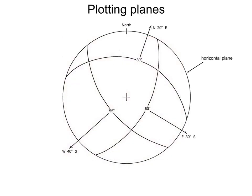This figure shows planes of different orientation. A horizontal plane will fall on the primitive. A vertical plane will be a straight line passing through the center. Planes with dip in between will be closer to the center of the stereonet if they are steep, or to the primitive if they are gentle.